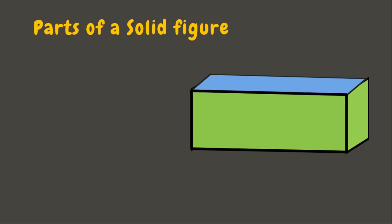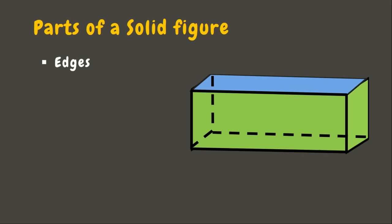Now let's learn about the parts of a solid figure. First, the edges. Edges are the line segments that meet or join together in order to create a figure. This object right here has 12 edges.